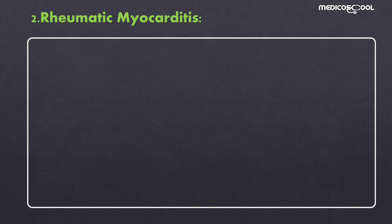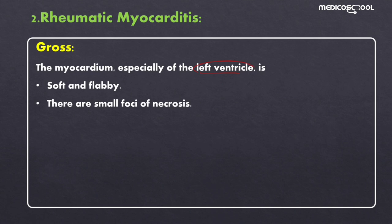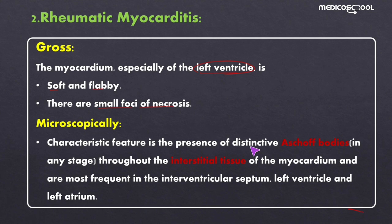When the myocardium is involved, this is known as rheumatic myocarditis. Grossly, mainly the left ventricle is involved and the myocardium is soft and flabby with small foci of necrosis. Microscopically, there are characteristic Aschoff bodies in any stage in the interstitial tissue of the myocardium, most frequently in the interventricular septum, left ventricle, and left atrium.